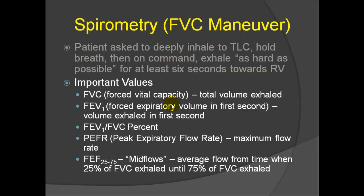After we do the maneuver, we graph this on a form, and we are able to measure certain key values, such as the forced vital capacity, which is the total volume exhaled during the forced vital capacity maneuver, the FEV1, which is the volume that came out in the first second of the forced vital capacity maneuver. We can make a ratio of the FEV1 over the FVC and express that as a percentage, which is an important measure of obstruction. We can look at the peak expiratory flow rate, and we can look at a value called mid-flows, which is the average flow from the time when 25% of the vital capacity has come out up until the time 75% of the vital capacity has come out.